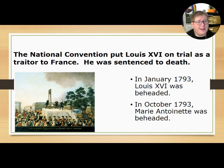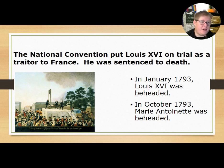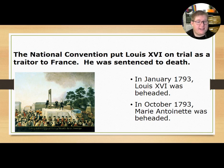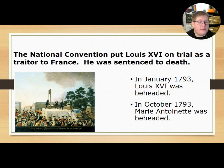The National Convention put Louis XVI on trial as a traitor to France, and he was sentenced to death. In January of 1793, he was executed by guillotine. Just nine months later, in October, his wife Marie Antoinette was also beheaded.